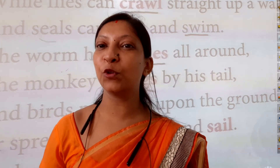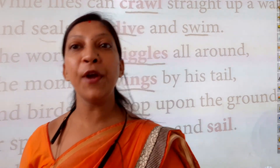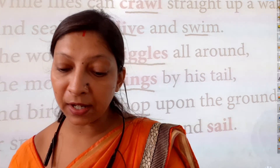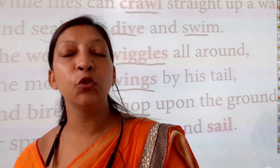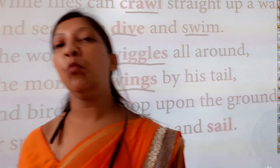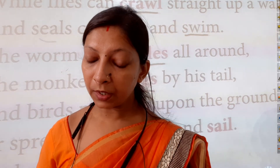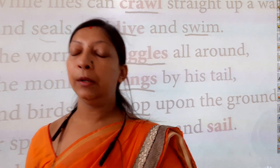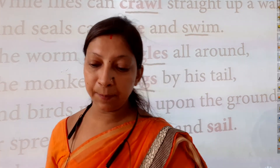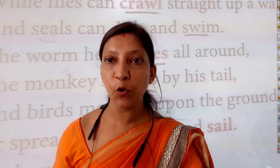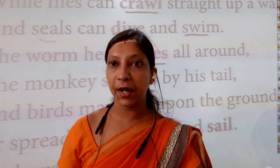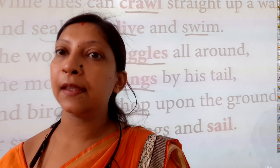So this is the poem 'How Creatures Move,' children. In this poem it has been shown that different animals, birds, and human beings all have their own different ways to move — from here to there. Each has some or other way to move. And boys and girls can walk, run, leap, and dance.